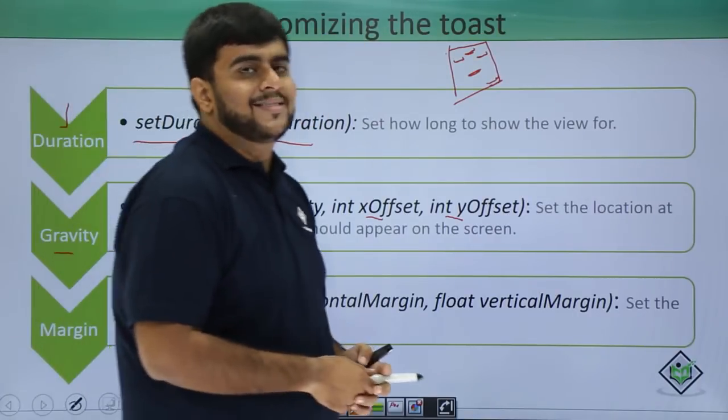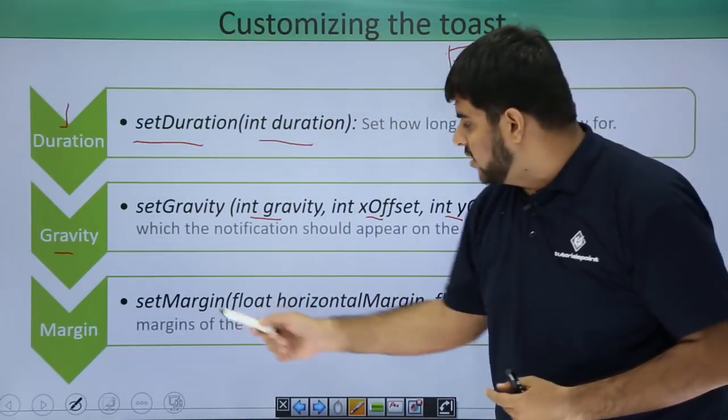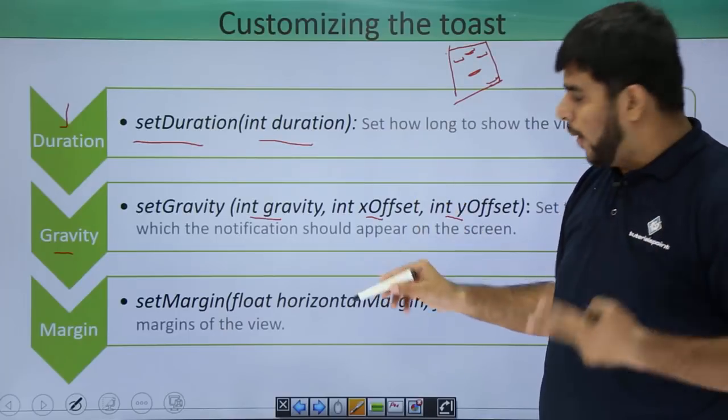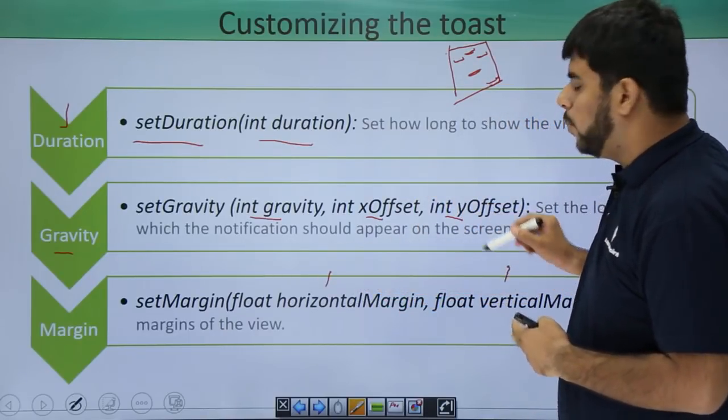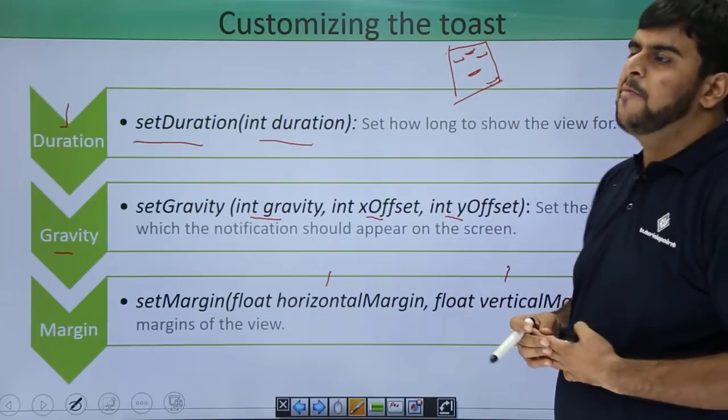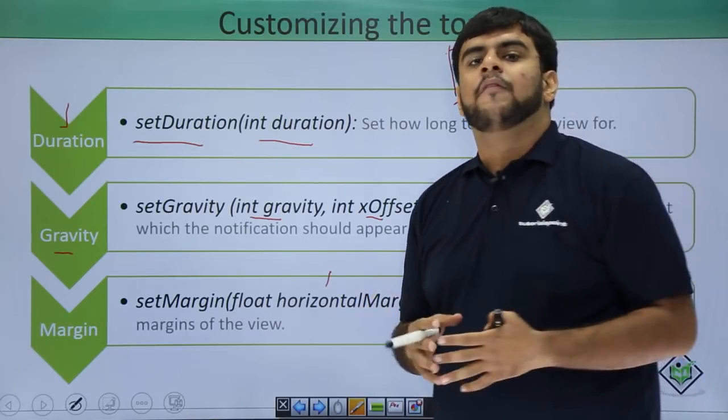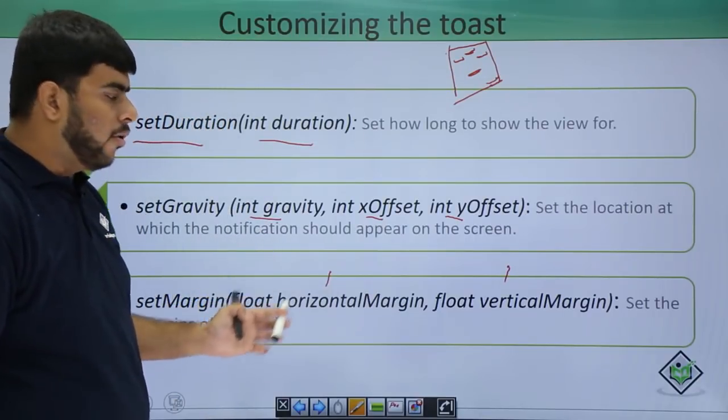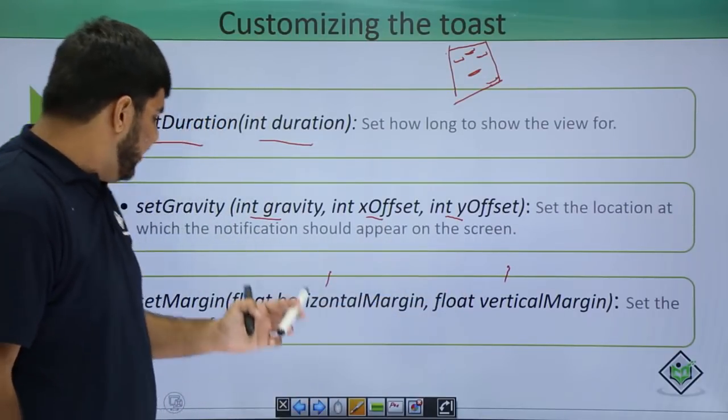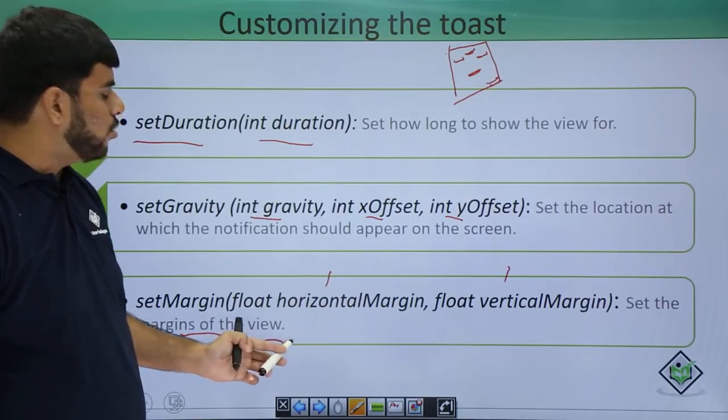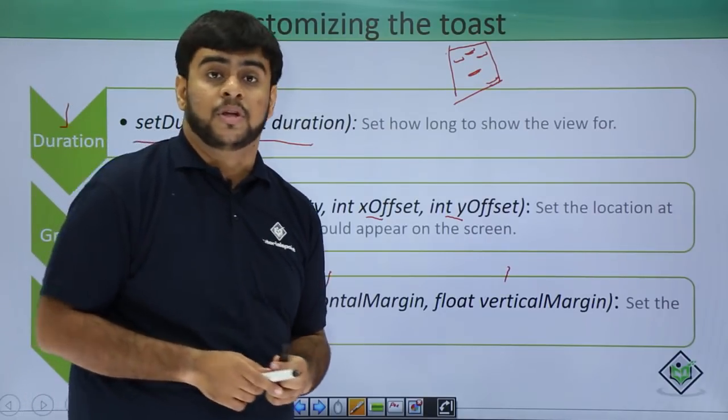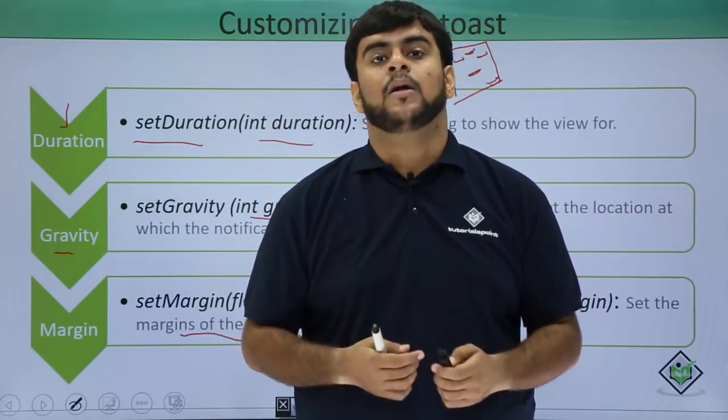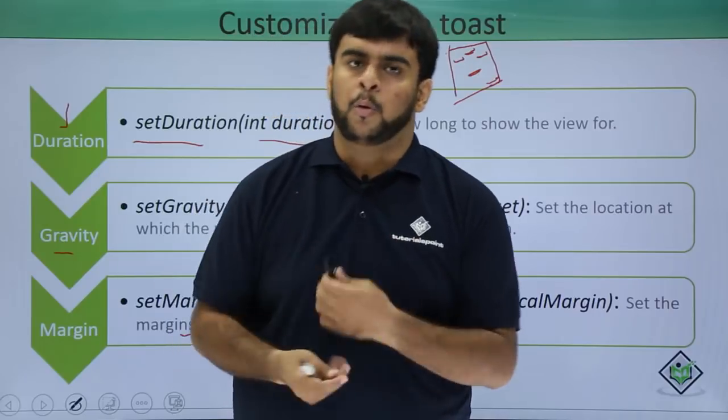After the toast is the point wherein we set the margins. The margins are also having two parameters. One is a horizontal margin and second is a vertical margin. The type of these margins are float in nature. You can pass these margins as float margin, float horizontal and float vertical. They will set the margins of the view of which you want to show the toast.